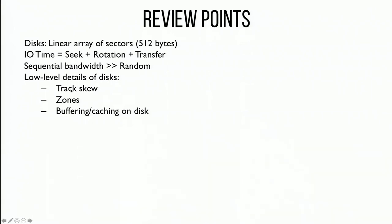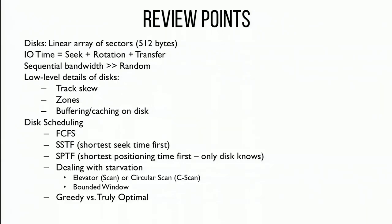We also talked about track skew — the fact that blocks across different tracks have offset addressing so a sequential read spanning multiple tracks can go as fast as possible. We talked about zones, which give a constant density of sectors per track, so you end up with better bandwidth on the outer tracks than the inner tracks. Then we talked about buffering or caching on a disk — each track has a track buffer, so when you're at the right track the disk immediately reads contents into that buffer. There's also write caching where writes are kept in volatile memory and flushed to persistent surfaces when convenient.